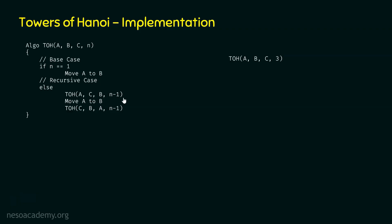The first character indicates the source peg, the second is the destination peg, and the third is the intermediate peg. So in this call, the source peg is A, the destination peg is C, and the intermediate peg is B. We need to transfer two disks from peg A to peg C via peg B. Control shifts from TOH(A,B,C,3) to TOH(A,C,B,2). B has been replaced by C, C has been replaced by B, and N becomes 2.